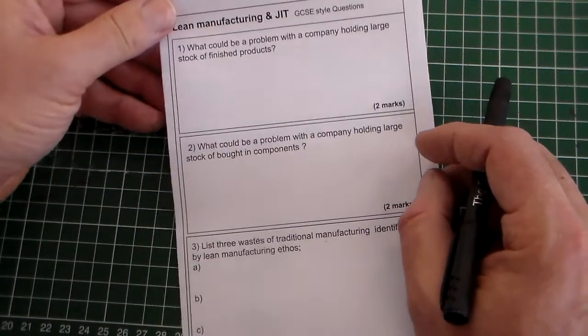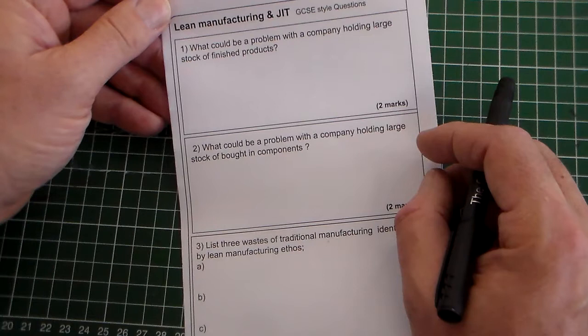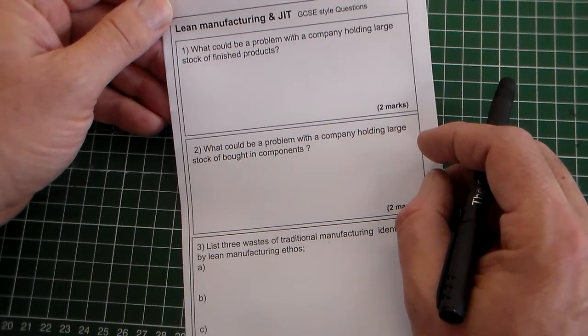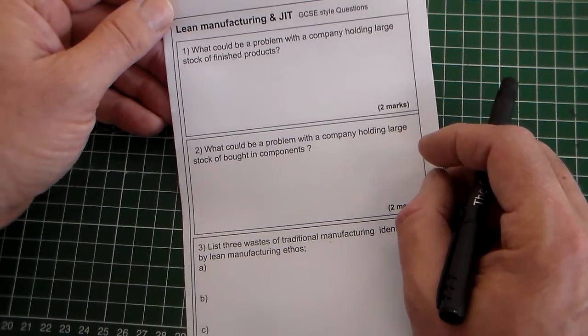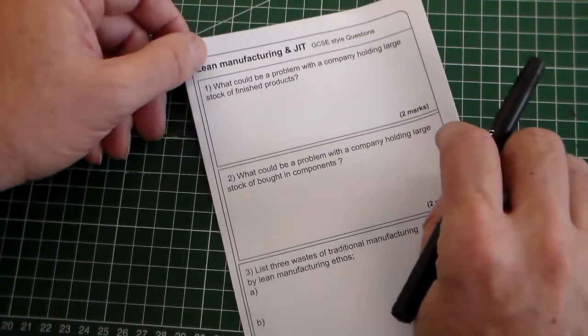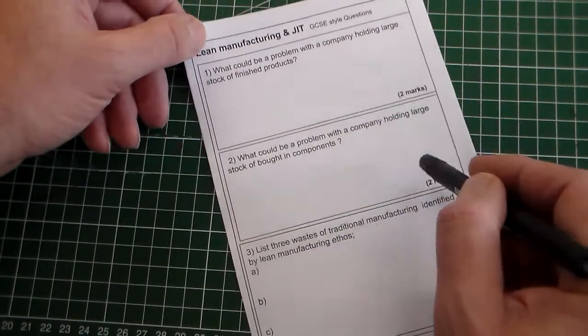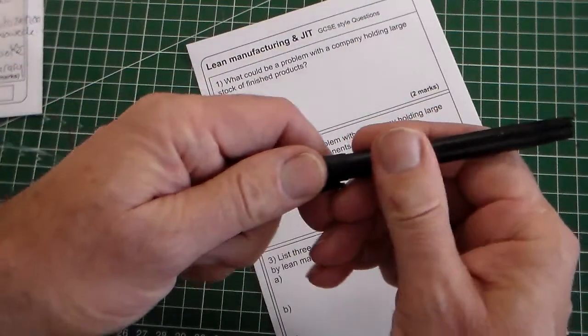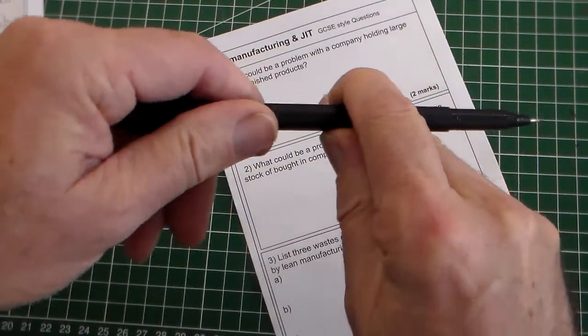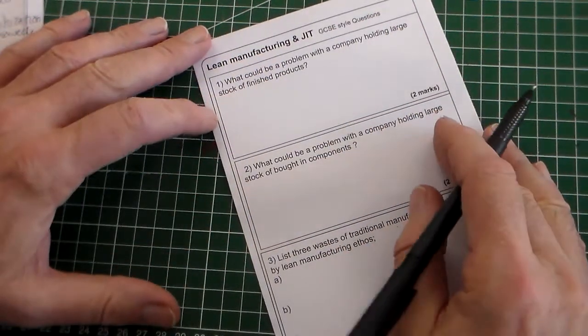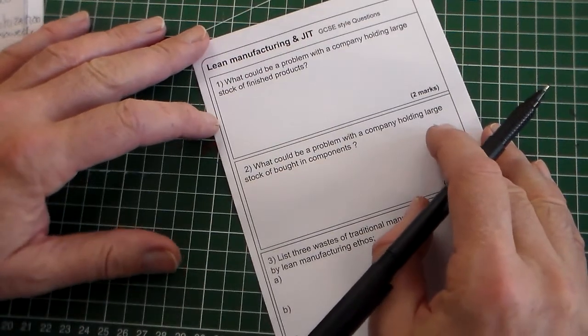Okay, we're going to have a look at this learning review for lean manufacturing and just-in-time manufacturing. These are GCSE style questions with marks allocated: two marks, two marks, and six marks. So we're going to have a go at this. First question: what could be a problem with a company holding large stock of finished products?